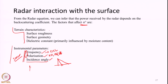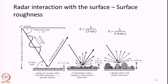What we are really interested in is to understand what terrain characteristics influence sigma-0. Some important terrain characteristics that influence microwave backscattering are: surface roughness — how rough or smooth the surface is; surface geometry — dealing with the orientation of the surface and features present on it; and the dielectric constant of the surface, primarily influenced by its moisture content. These three factors are the key controlling factors from the terrain side that control microwave backscattering towards the radar antenna.